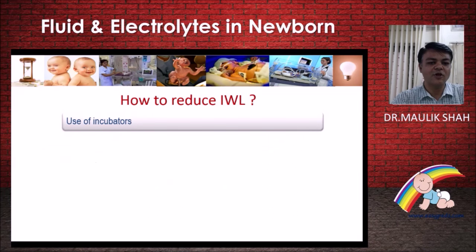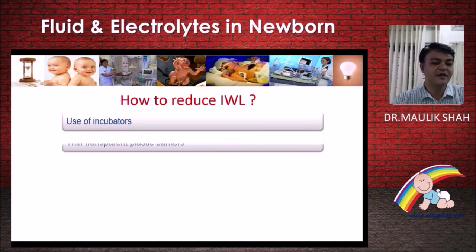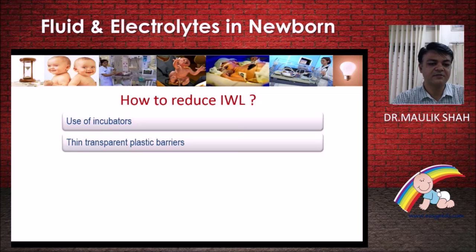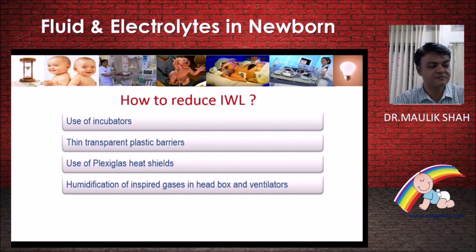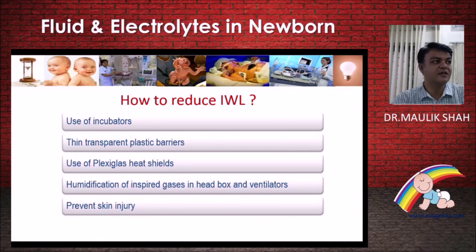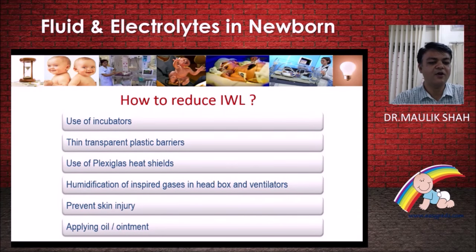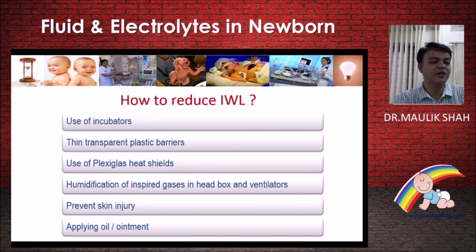To summarize measures for reducing IWL: use incubators for smaller preterm babies wherever possible; use thin transparent plastic barriers like cling wrap, plexiglass heat shields where incubators are unavailable; use humidification of gases to prevent respiratory mucosal loss; prevent skin injury; and apply oil and ointments as a barrier for preventing insensible water loss.